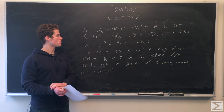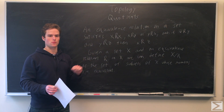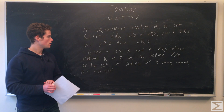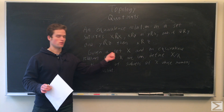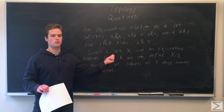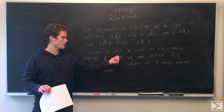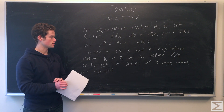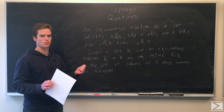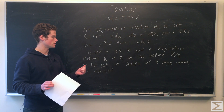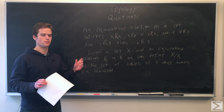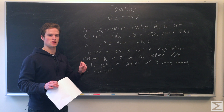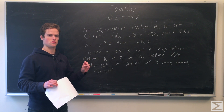The equals sign is an example of this. If you take a circle and break it up into different parts, that's also an example — the equivalence relation being that two points are equivalent if they're in the same part. So given a set X, we can define an equivalence relation R on X, and define X/R as the set of subsets of X such that each member of X/R represents an equivalence class of X — a subset where each member is equivalent to every other member in the subset, and to no members of other subsets.